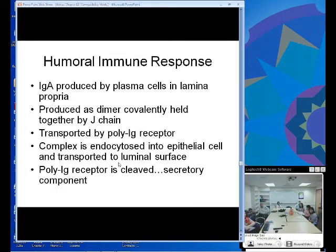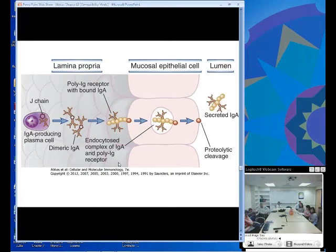IgA is produced by plasma cells in the lamina propria as a dimer held together by a J chain, like we talked about last week. It's transported by the poly-Ig receptor. The complex is endocytosed in the epithelial cell, transported to the luminal surface, and then the poly-Ig receptor is cleaved. Just the IgA and the secretory component are secreted into the gut. This is the same graphic we had up - the IgA dimer held together by a J chain, bound to a poly-Ig receptor, endocytosed, moved across the epithelial cell where it's cleaved, and then the secretory component is secreted into the lumen with the IgA dimer.